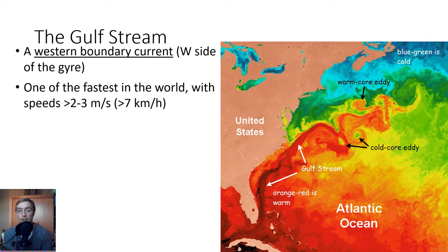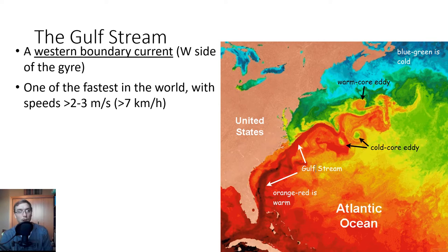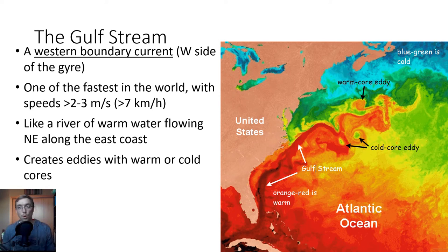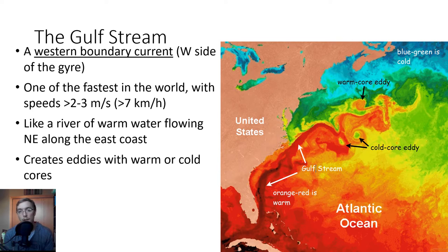Looking at the Gulf Stream more closely — we see warm core eddies, circulating eddy systems driven by warm or cold water differences. As a western boundary current, it's one of the fastest in the world, moving at two to three meters per second, over seven kilometers per hour. It moves like a river of warm water flowing northeast along the eastern coast, creating eddies with warm or cold cores. This warm water injection along the entire Eastern United States — from Florida through the Carolinas — drives warmer climates in that region.